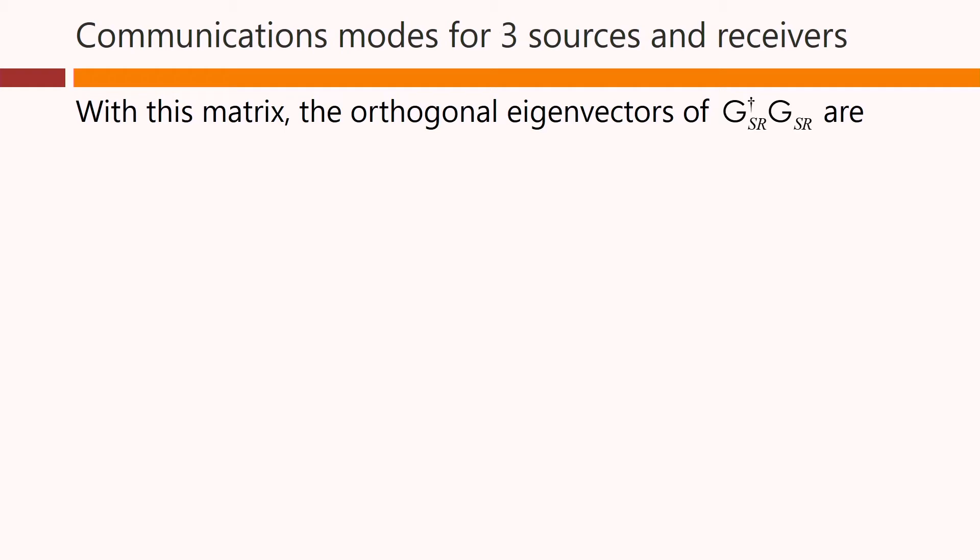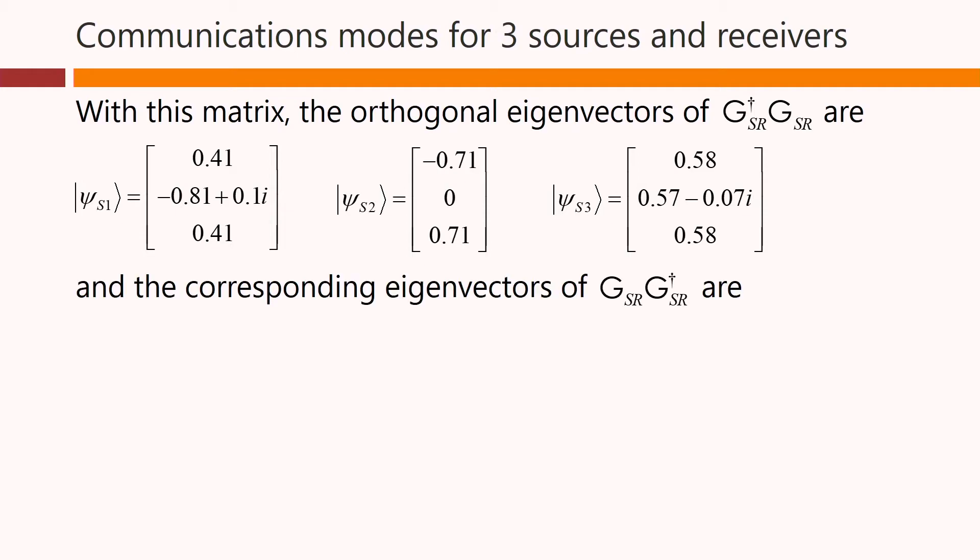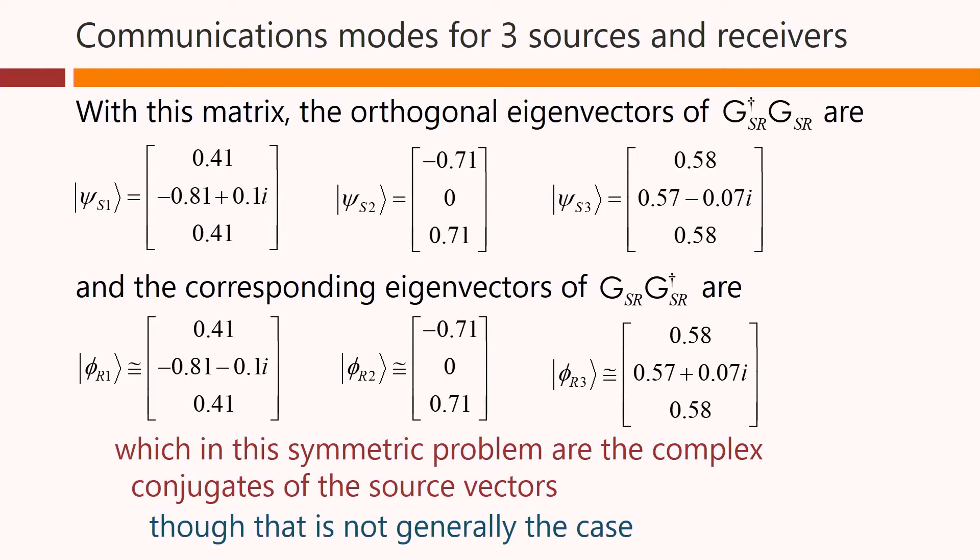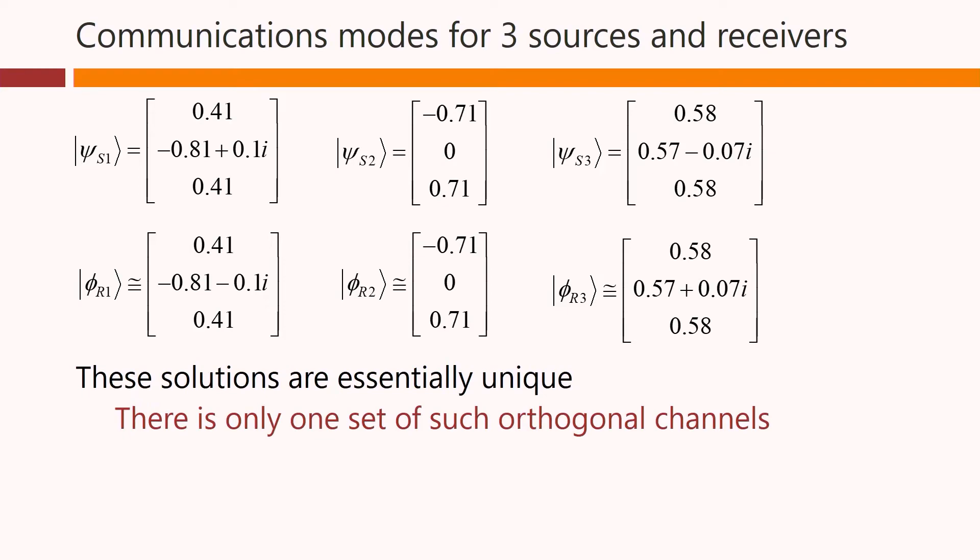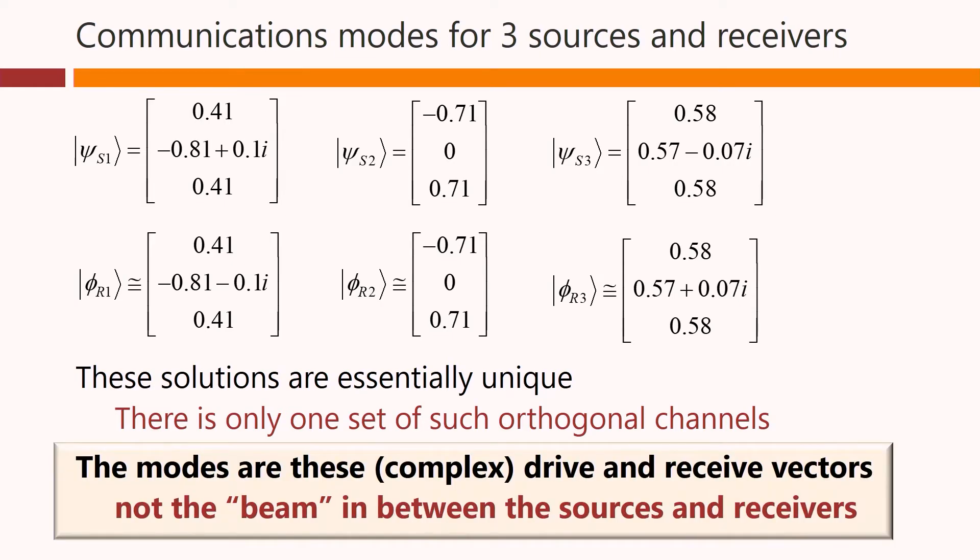With this matrix, the orthogonal eigenvectors of G†G are these three vectors. And the corresponding eigenvectors of GG† are these three vectors. And in this symmetric problem, these happen to be the complex conjugates of the source vectors, though that is not generally the case. So these solutions that we have here are essentially unique. There is only one set of such orthogonal channels. The modes, then, are these complex drive and receive vectors, not the beam in between the sources and receivers. It's these vectors that are the solutions of the eigenproblems. These are the modes.